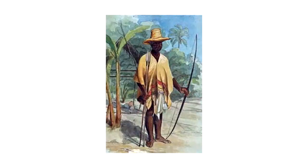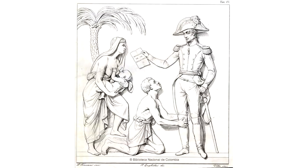In Spanish America, the revolutionary forces enlisted slaves in their fight for independence, promising freedom in return. Thousands gained manumission by siding with the rebel forces, and new national governments enacted gradual abolition. The first step toward abolition was often through free womb laws that freed children born to slave women. These laws passed across independent Spanish America between 1811 and 1825, creating gradual abolition but not imposing an immediate financial loss on slaveholders.